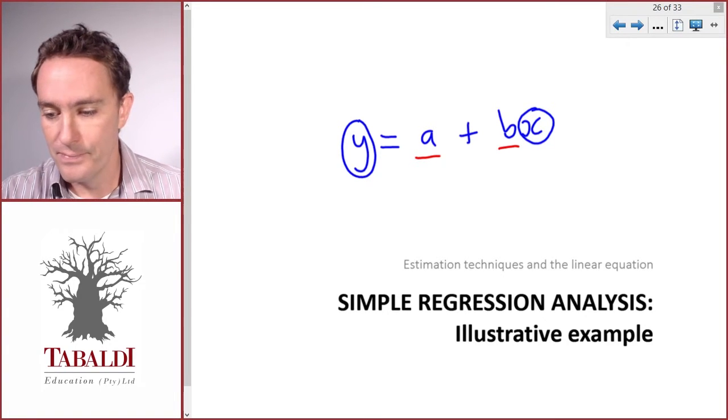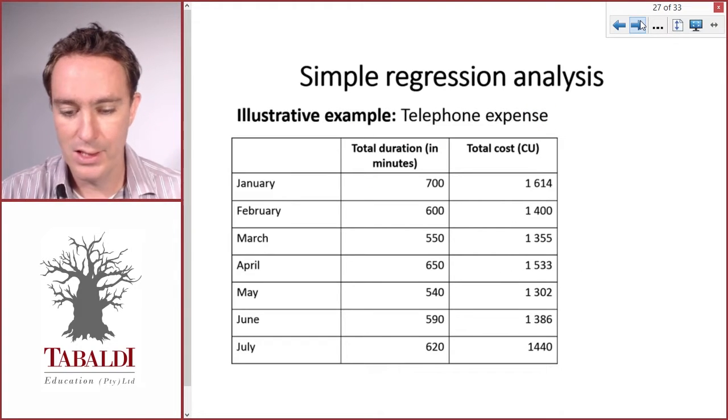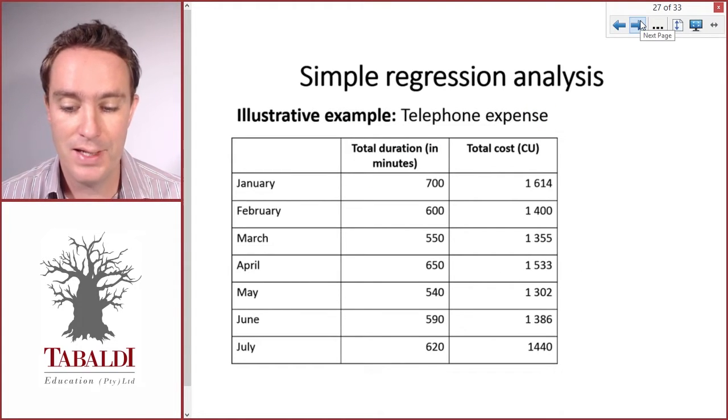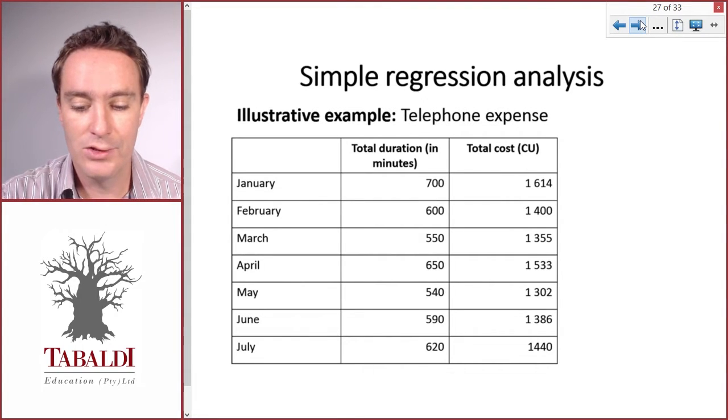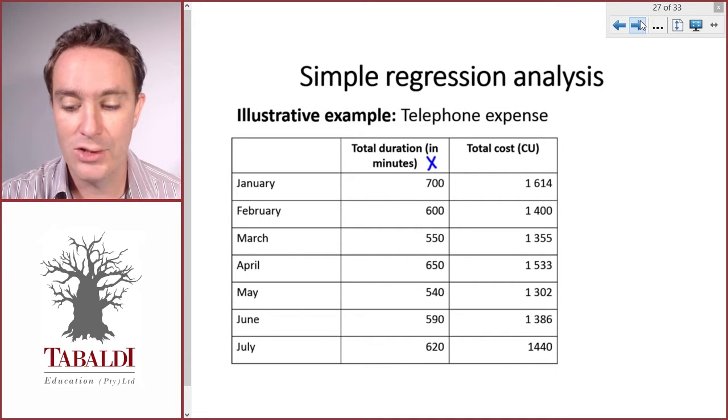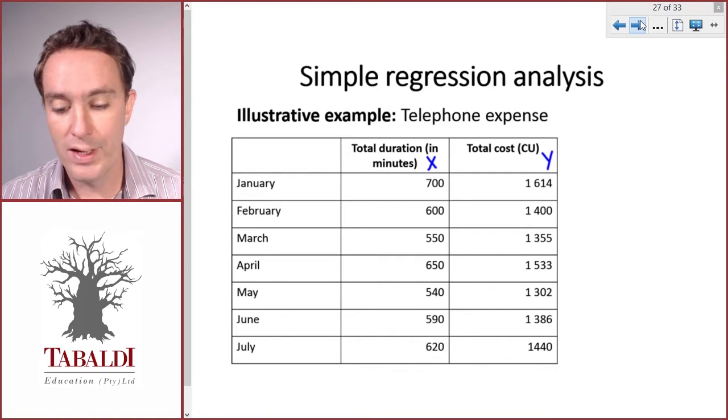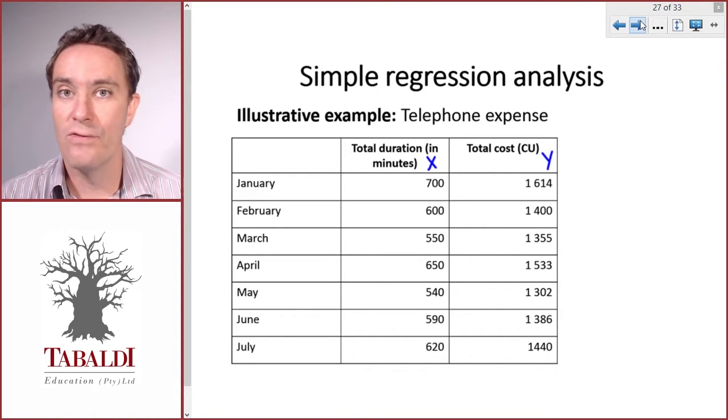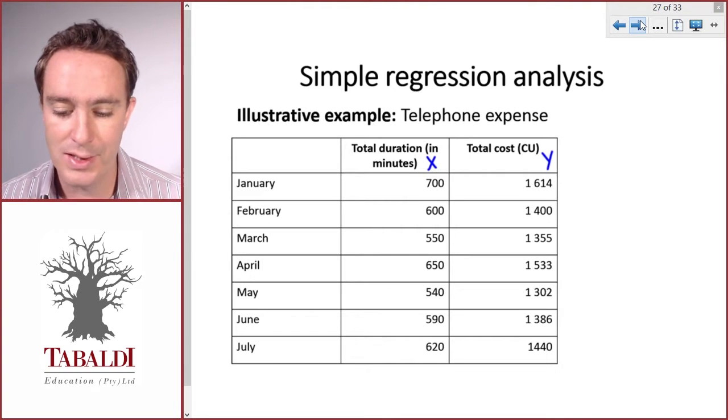Let's look at an example. Here we've got the telephone expense for the past seven months. We have total duration - that's our activity level or x - and then total cost for each month, that's our y. We want to calculate a and b, our fixed cost and variable cost per unit, because these costs represent a mixed cost.